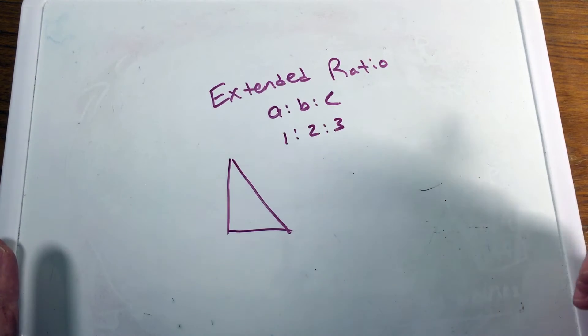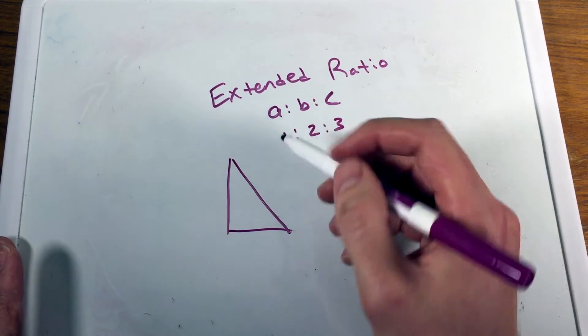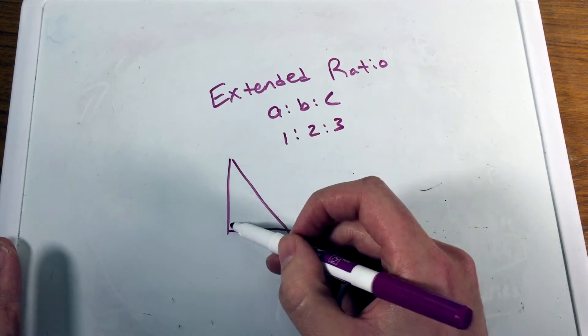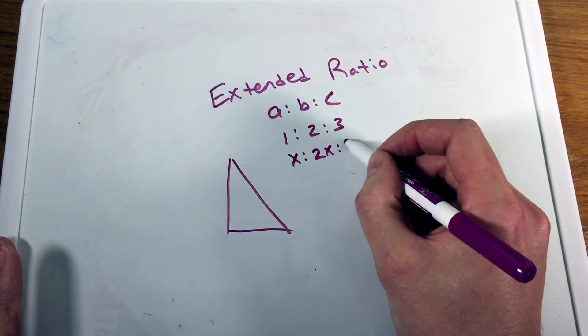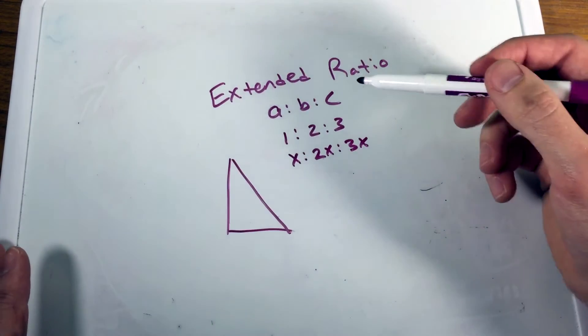Our extended ratio, if we say it's one to two to three, it could be like an X to two X to a three X here.